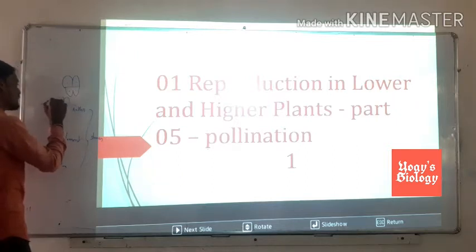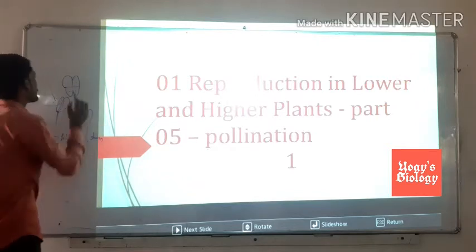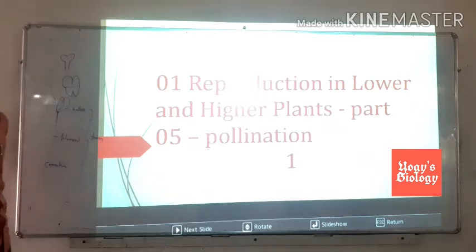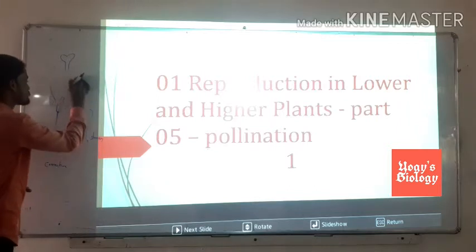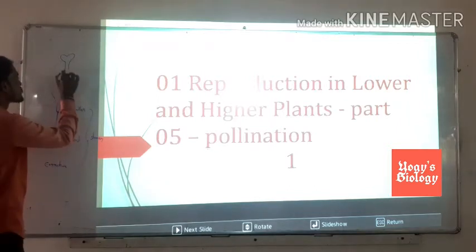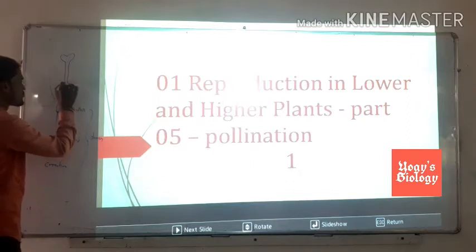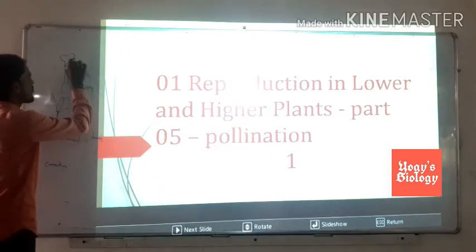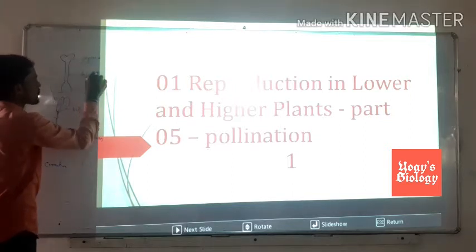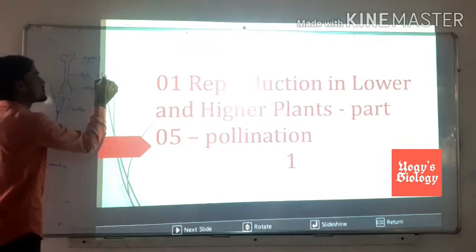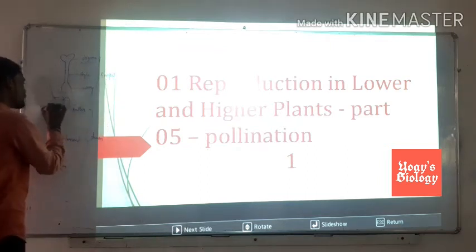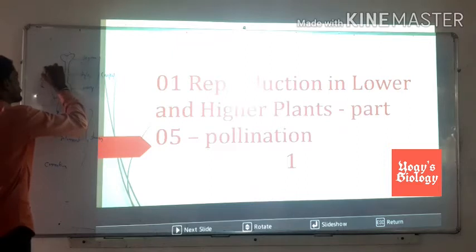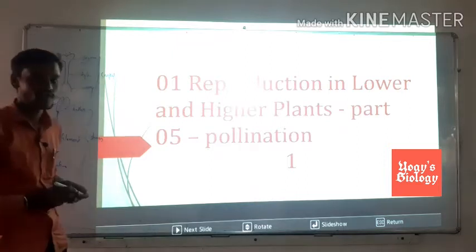The pollen grains are dispersed and transfer into the stigma. The stigma is the female reproductive organ. The female reproductive organ — the carpel — consists of the ovary, the style, and the stigma. The transfer of pollen grains into the stigma is the process called pollination.